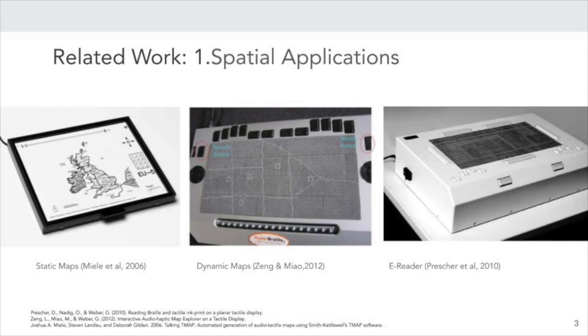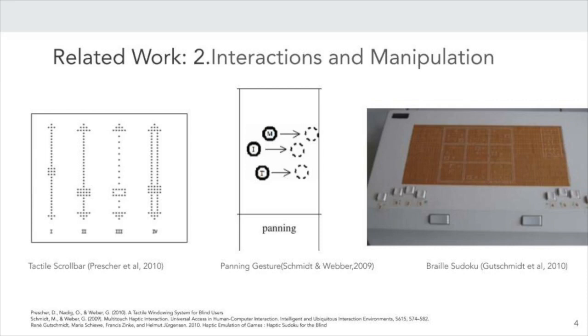We draw upon some of the insights from these previous studies in the design of our non-visual representation. The second body of work we look into is on interactions performed on the full-page braille displays. Despite the limited real estate available on these displays, interactions such as scrolling using tactile scroll bars as illustrated in Pressure and colleagues' work in 2010 and the three-finger panning interactions demonstrated by Schmidt and Weber in 2009 have been proposed as ways of accommodating large amounts of information on refreshable braille displays.